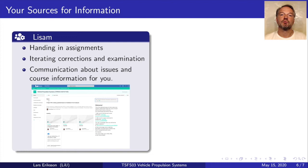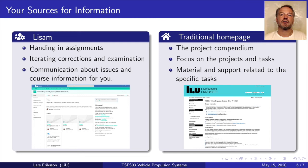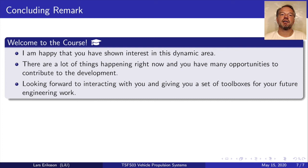Your main source of information is Lisan, where you'll find links to Zoom rooms and where you'll hand in assignments, iterate on corrections, and follow up on your examination. It's also used for course communication. The traditional course homepage contains things that remain more or less consistent year to year, including lecture slides, hand-in assignments, and help for those assignments — you'll hopefully spend most of your time searching for information there, then go to Lisan to finalize and follow up on reports.